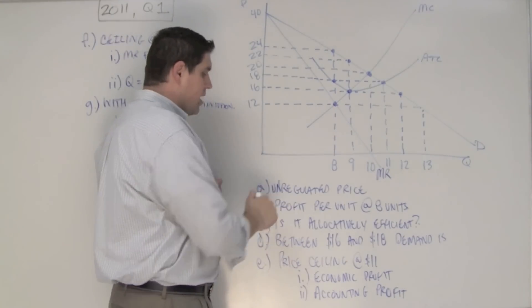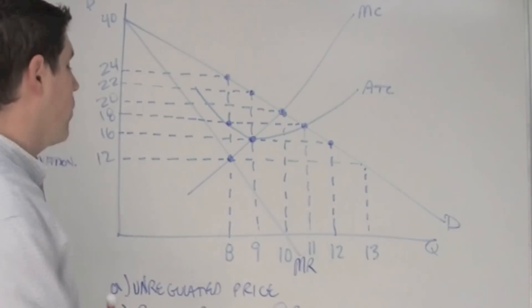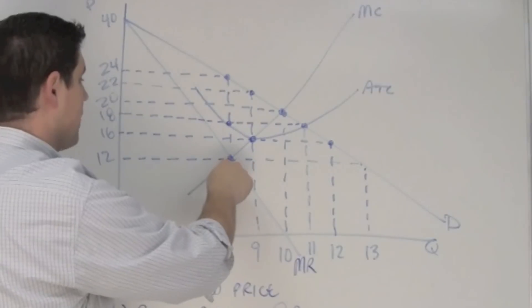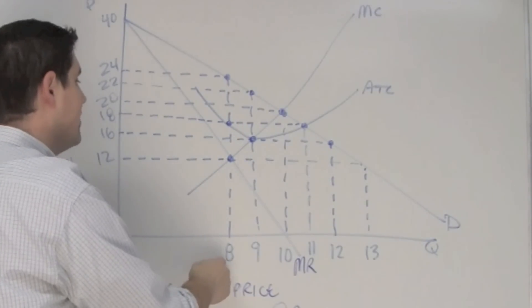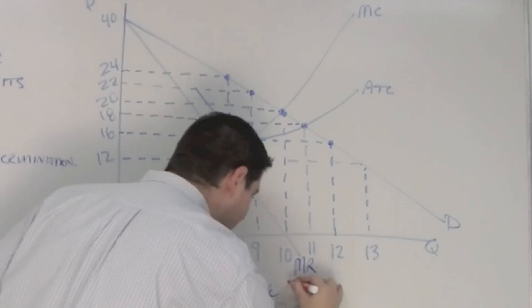Now it starts off with the simple stuff, the unregulated price. Well, a monopoly produces where MR hits MC, which is right here. So quantity is 8, they're going to have to produce, but up to the demand curve, so the price here is $24.